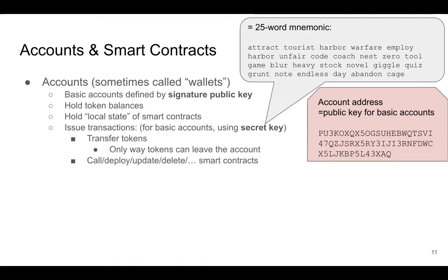To authorize any movement of tokens out of your account — any transaction — you write the transaction and sign it using this secret key. Intuitively, what an account does is hold the tokens you have, the state of smart contracts (we'll see that later), and it allows you to issue transactions — either to transfer tokens or to interact with, call, deploy, or update a smart contract.